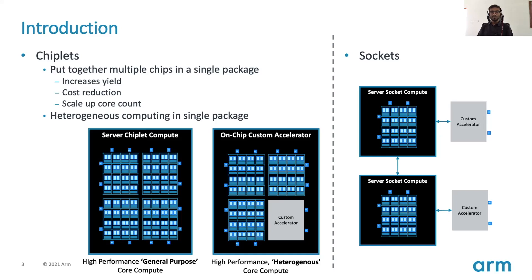One of the solutions to overcome this problem is to build a chiplet-based system or a socket-based system, where multiple chips are packaged in a single die and joined using a coherent link in case of a chiplet-based platform, or multiple chips are connected through a high-speed physical link in case of a socket-based system. A chiplet can be a homogeneous platform where identical chips are packaged in a single die, or a heterogeneous platform where identical chips along with a custom accelerator are packaged within a single die to tailor to a specific workload.